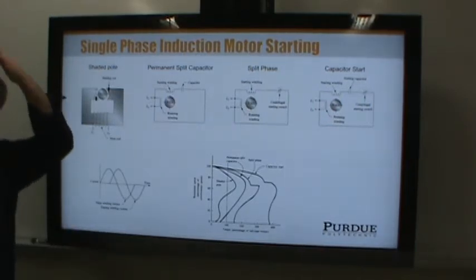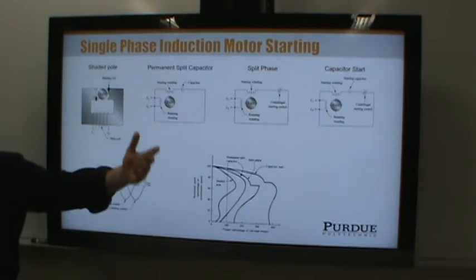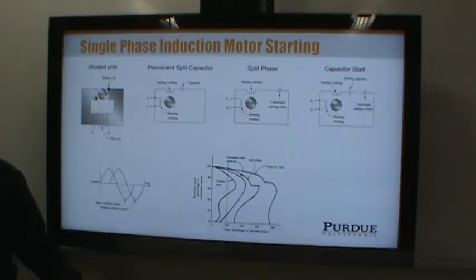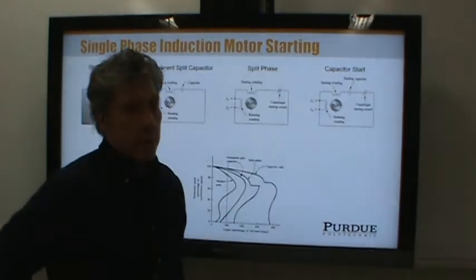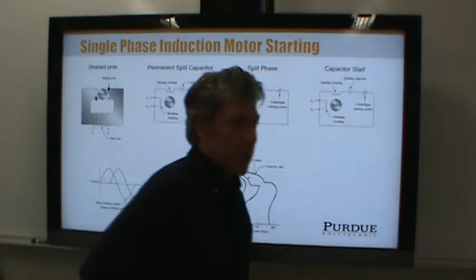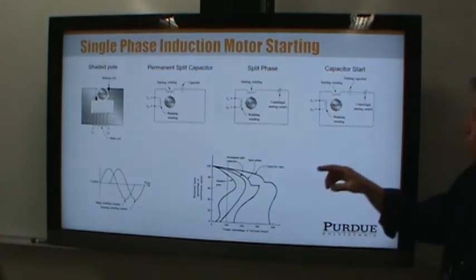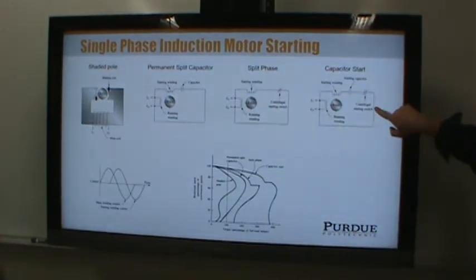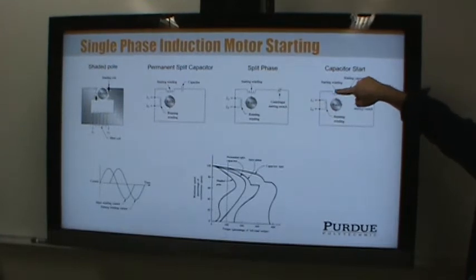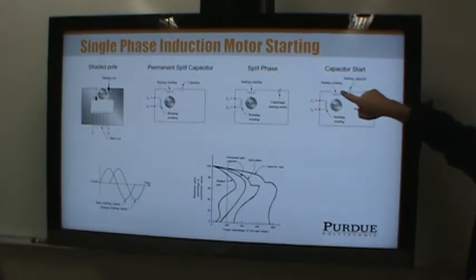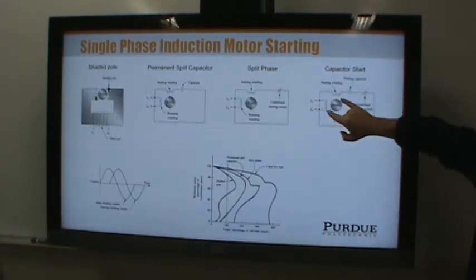If you have an air conditioner unit outside your home — say you have central air — you probably use a capacitor start motor. The way this works is there's a starting capacitor in series with a starting winding, and there's also a run winding.